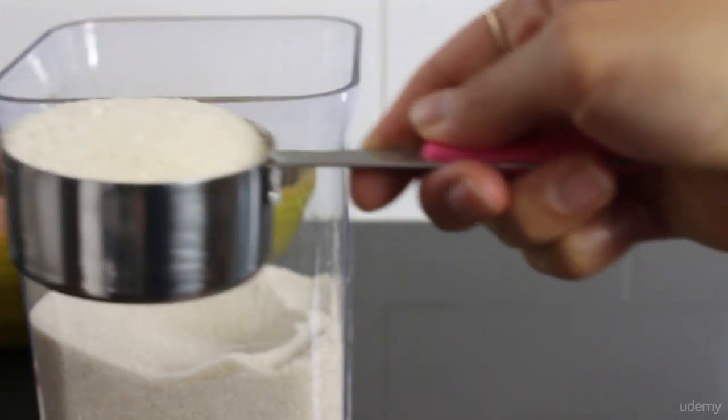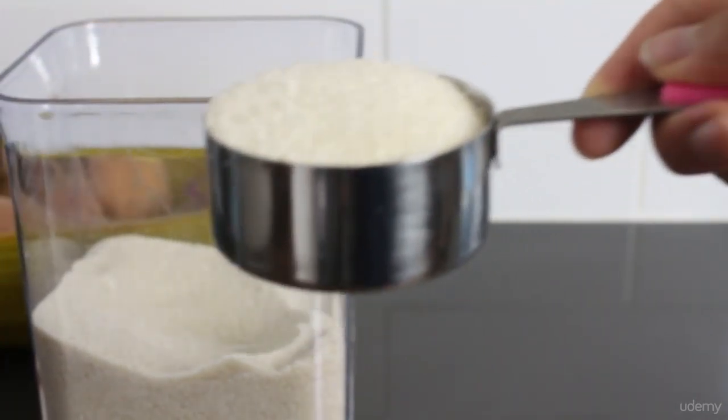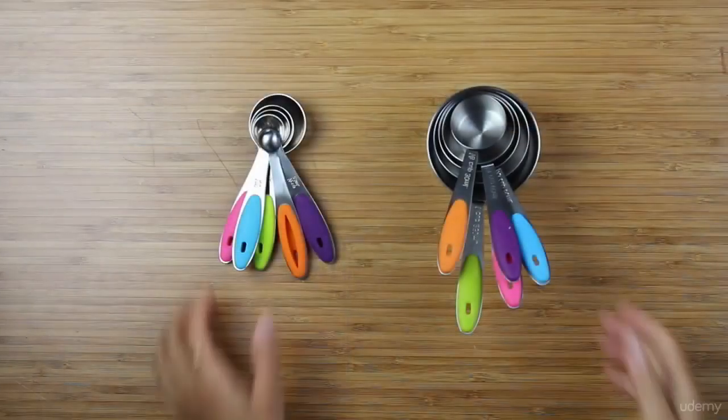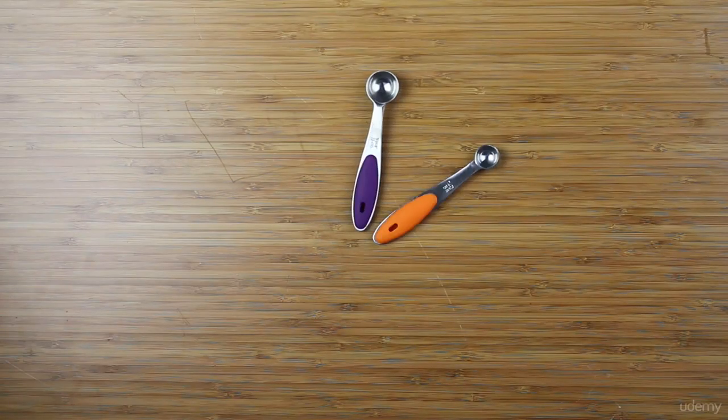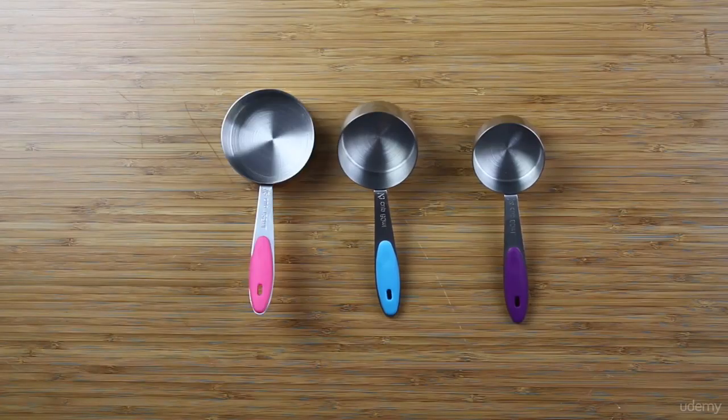Measuring is an important part of cooking and is essential in baking. There are two basic measuring utensils that are used most frequently: measuring spoons for measuring small amounts and measuring cups for larger amounts.